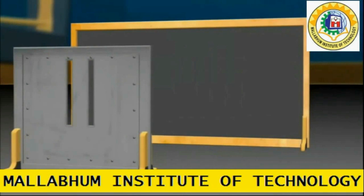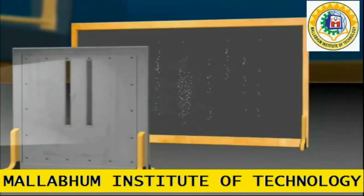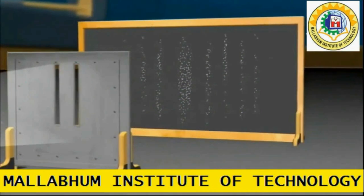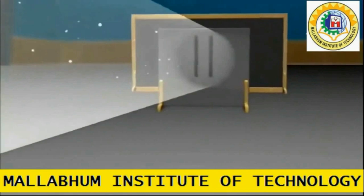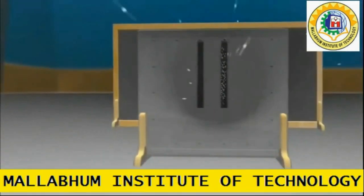But we observe that an interference pattern is being formed on the back wall, like the wave. But we have fired electron, which is the smallest form of matter. Then why it behaves like a wave?